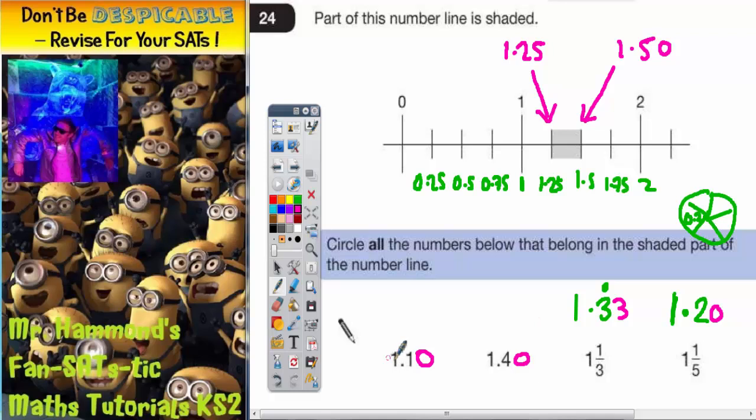Now which of these numbers lie between 1.25 and 1.50? Well 1.10, if you just think about money, 1.10 is less than 1.25. So that one wouldn't be between it.